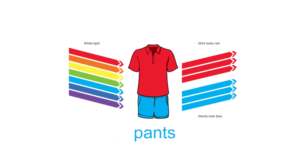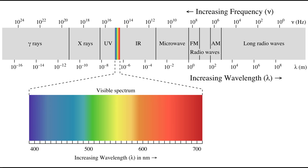This shirt looks red because it's bouncing back only red light and absorbing all other colors, and these pants look blue because they're bouncing back only blue light and absorbing all other colors. If these clothes looked black, it would be because they're absorbing all light waves and not bouncing back any of them. Here just to the left of visible light, with a higher frequency than visible light, we have ultraviolet waves. And even more to the left, with an even higher frequency than ultraviolet waves, we have x-ray waves.